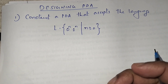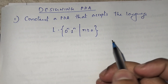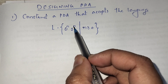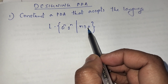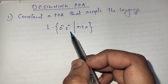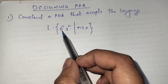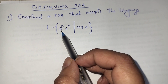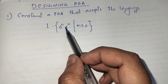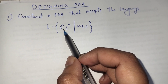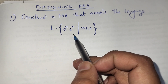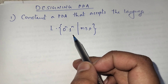Next is how to design a pushdown automata. The problem is: construct a pushdown automata that accepts the language L equal to 0 power n, 1 power n, such that n is greater than or equal to 0. This language cannot be recognized by a finite automata because we need equal number of zeros followed by equal number of ones. We need to count zeros, count ones, then compare them — storing, counting, comparing is impossible for finite automata due to its limited memory.